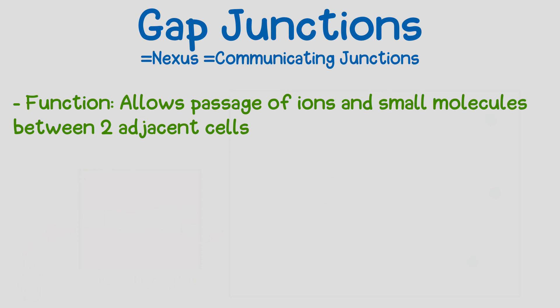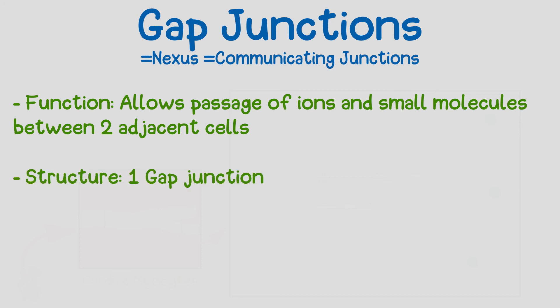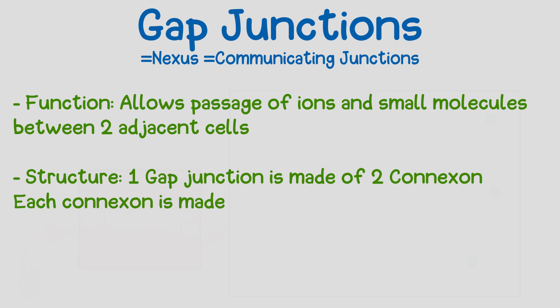To sum this up, the gap junctions between adjacent cells are made of two half channels called connexons, and each connexon is made of six protein subunits called connexin. The function of gap junctions is to allow passage of small molecules and ions.